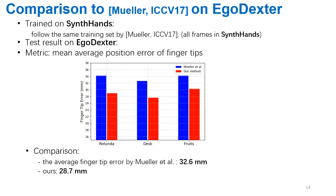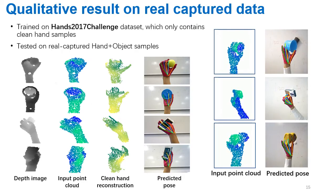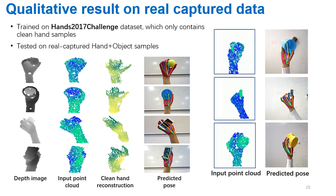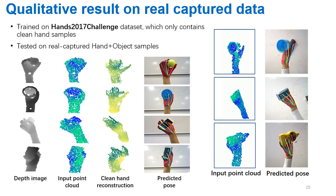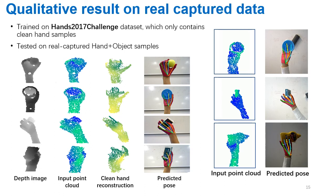We compare our method to Miller's method on the EgoDexter dataset. Since the dataset is only annotated on 3D fingertip positions, we use fingertip errors to compare performance. Our method outperforms the state-of-the-art method on the test sequences, achieving an average error of 28.7 mm. We also trained our method on the Hands 2017 challenge dataset, which is a real captured dataset that only contains clean hand samples, then tested the trained model on some real captured hand-object samples. Note that high-quality point cloud reconstruction is not strictly required in our method. This figure shows that occluded objects are roughly removed after reconstruction, indicating the importance of the cloud decoder for the formation of the clean hand latent space.